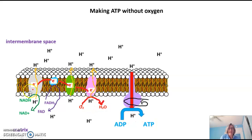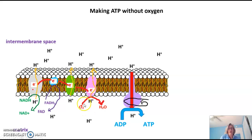At the end of this electron transport chain, oxygen is required to remove the electron from the chain in order for the next electron to keep coming down. When oxygen picks up that electron, water is formed.